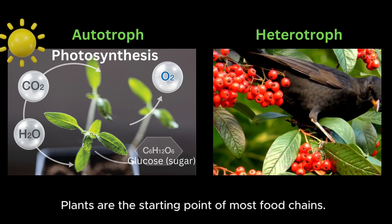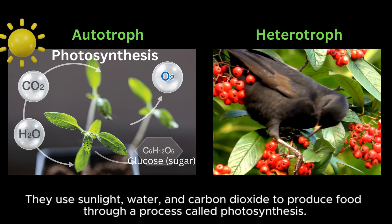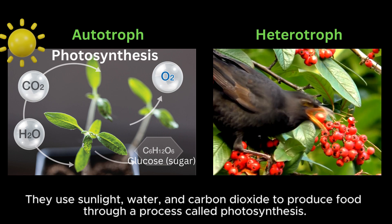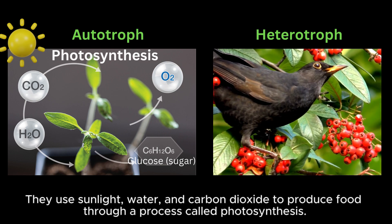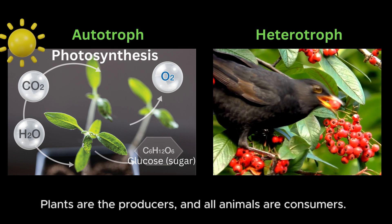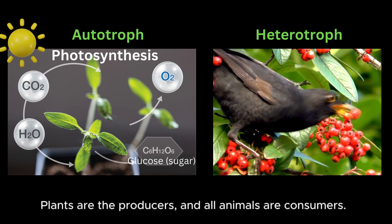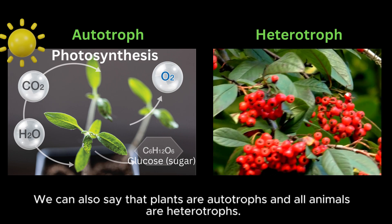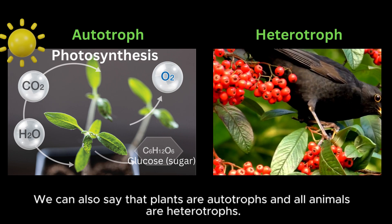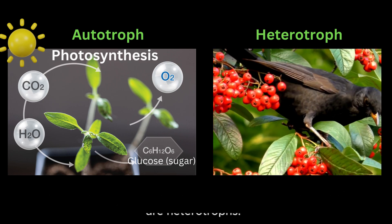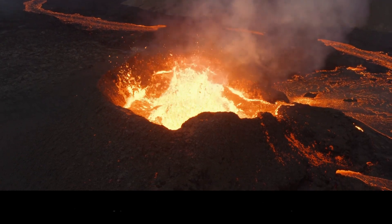Plants are the starting point of most food chains. They use sunlight, water, and carbon dioxide to produce food through a process called photosynthesis. Plants are the producers, and all animals are consumers. We can also say that plants are autotrophs and all animals are heterotrophs. Some types of bacteria are also autotrophs.